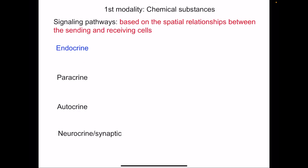The first mode involves chemical substances, and this signaling pathway is based on the spatial relationship between the sending and receiving cells. The sending cell releases chemicals, and the receiving cell is where the chemical acts. Based on how far or near the sending and receiving cells are in space, signaling pathways are classified into endocrine, paracrine, autocrine, and neurocrine or synaptic signaling.